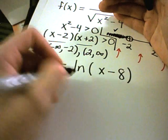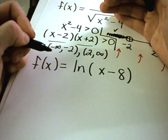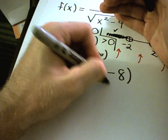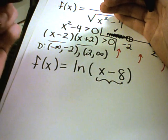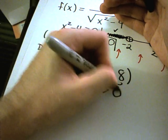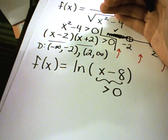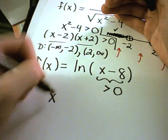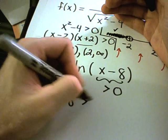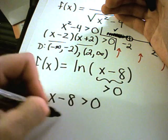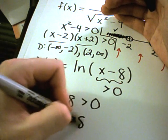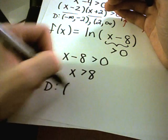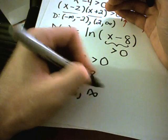Last but not least, we have the natural logarithm of the quantity (x minus 8). Recall that the argument of a natural logarithm must always be strictly greater than zero — you're only allowed positive numbers inside a logarithm. So we need x minus 8 > 0, and adding 8 to both sides gives x > 8. The domain in this case is from 8 to infinity.